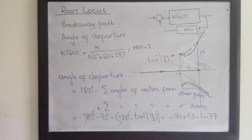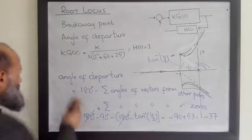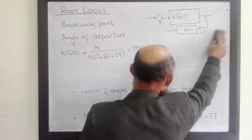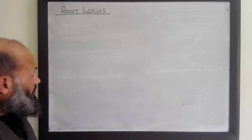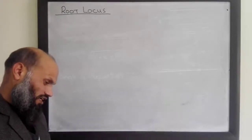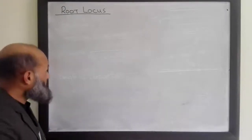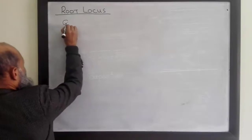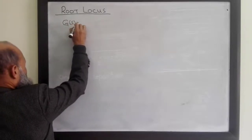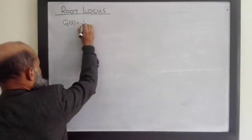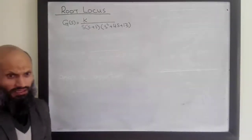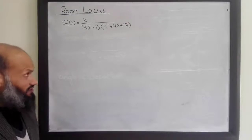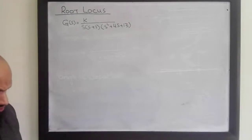Let's demonstrate all these things with one more example, and that will conclude today's lecture. The system we have is given by G(s). We want to obtain its root locus and determine all the relevant details of the root locus as well.